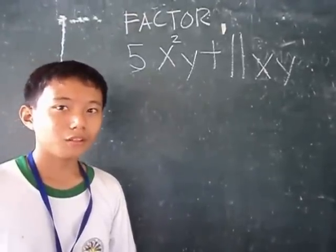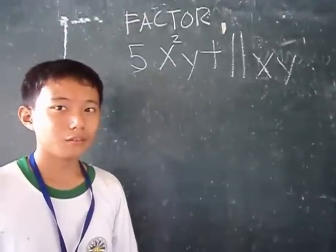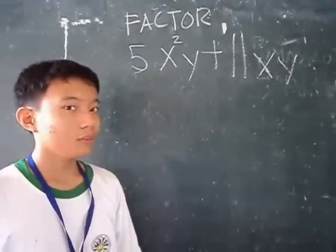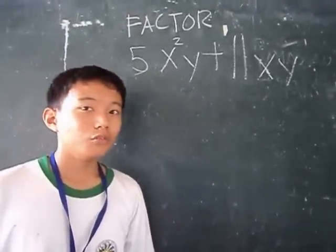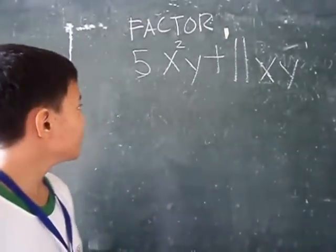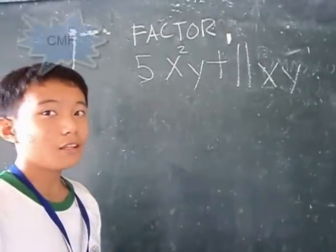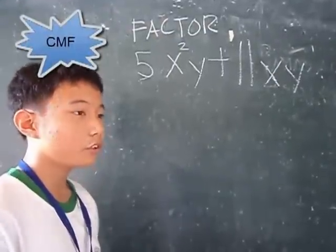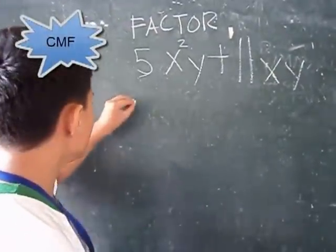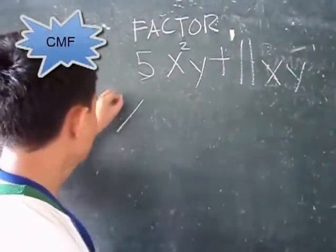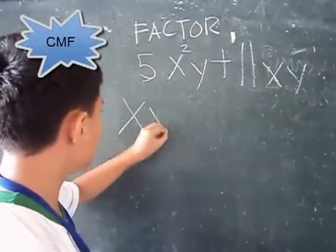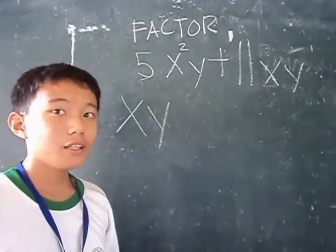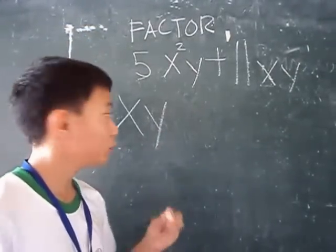Factor 5x² y plus 11xy. To factor this, find the common monomial factor, and then determine the other factor.